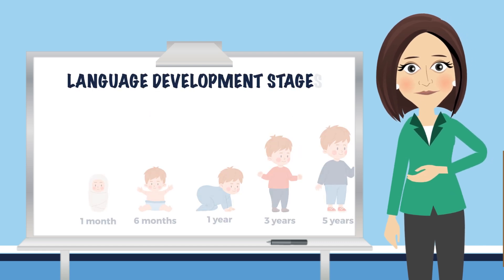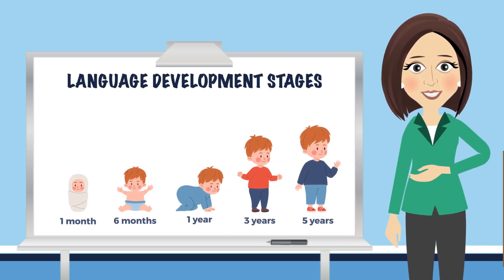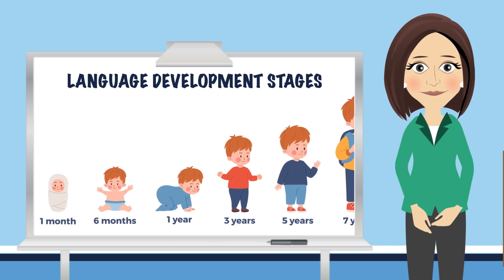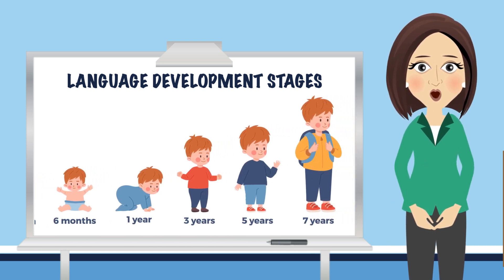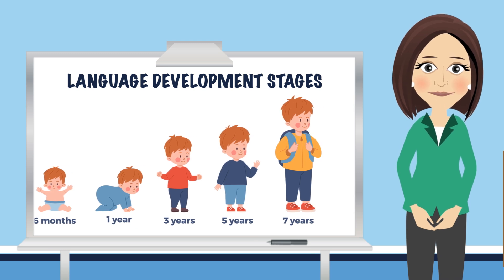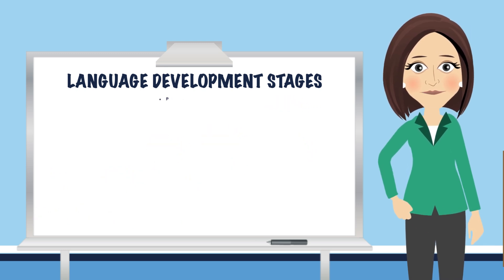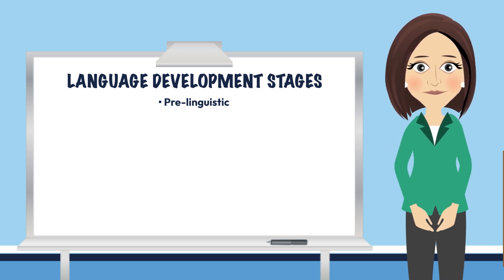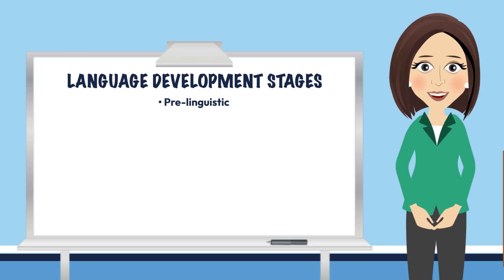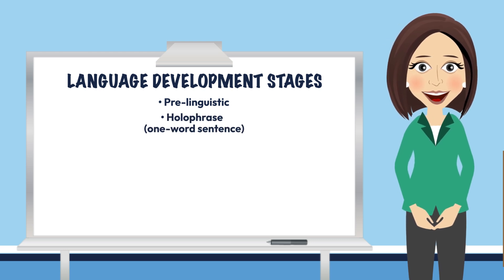The next big concept we covered dealt with the fact that oral language skills develop in children at different times, but there are general language development stages that children progress through on their way to becoming effective communicators. The pre-linguistic stage deals with pre-verbal communication used by infants, generally in the early to mid part of the first year. Around a year old, children move to the holophrastic, or one-word stage, where they develop and use single words to identify things or get a result.